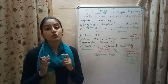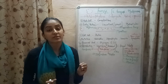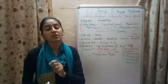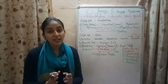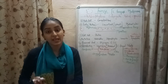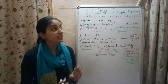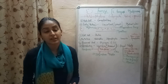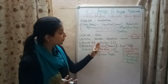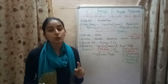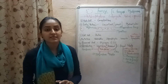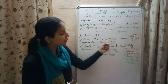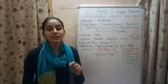Cell wall की बात करें, तो fungi की cell wall बनी होती है of a substance known as chitin. Since the organisms belonging to Kingdom Fungi are achlorophyllous — क्यूंकि इन organisms में chlorophyll absent होता है — fungi kingdom के organisms photosynthesis नहीं कर सकते, which means they are not autotrophic. They are heterotrophic. So, Kingdom Fungi includes heterotrophic organisms, which means organisms dependent on other organisms for their food.